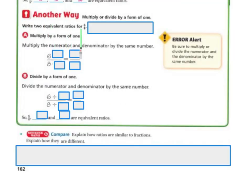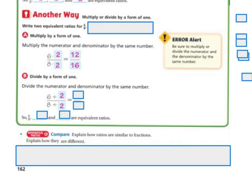Write two equivalent ratios for 6 over 8. Multiply by a form of 1. Multiply the numerator and denominator by the same number. We've done this before. We did this in chapter 1, a little bit in chapter 2 as well. 6 over 8. If I multiply the top by 2 and the bottom by 2, I'm going to get an equivalent ratio of 12 sixteenths. You can divide by the same number, too. If I divide the top and the bottom by 2, then I'm going to get 3 fourths. Because 6 divided by 2 is 3, 8 divided by 2 is 4. So, two equivalent fractions are 12 sixteenths and 3 fourths.